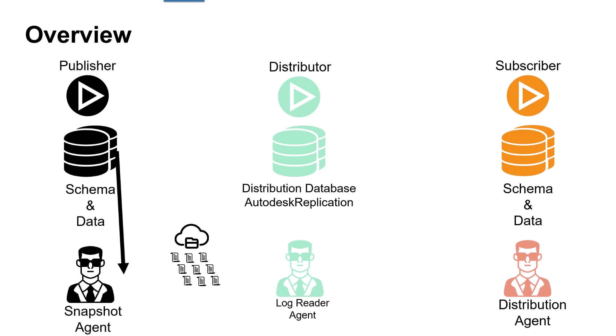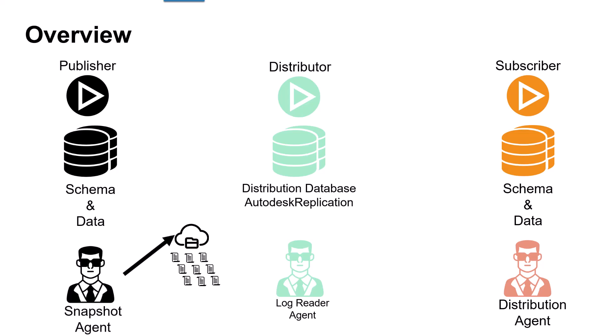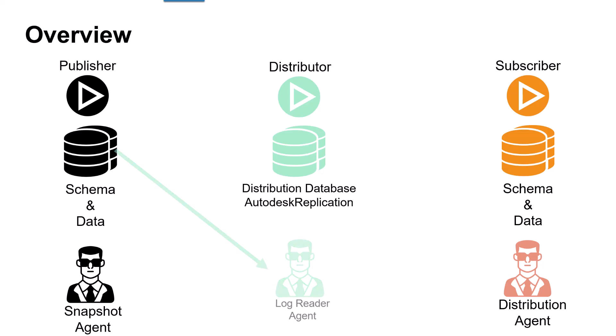The snapshot agent prepares snapshot files containing schema and data of published tables and database objects, then stores those files in the snapshot folder, and records synchronization jobs in the distribution database on the distributor. The log reader agent monitors the transaction log of each database configured for transactional replication, and copies the transactions marked for replication from the transaction log into the distribution database, which acts as a reliable store-and-forward queue.